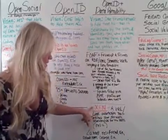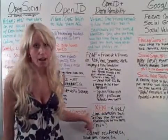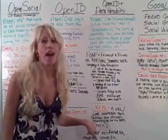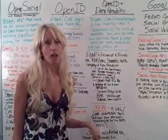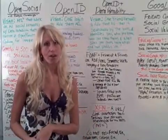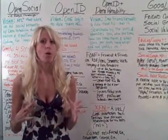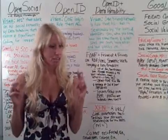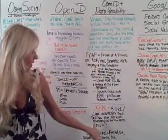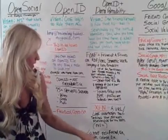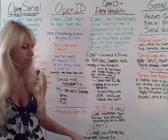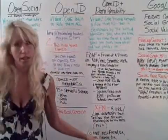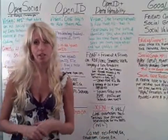XFN is essentially a URL or link annotation that you add in your links on your blog or on your social profiles. So when you have a blogroll and you want to identify someone on your network, you can say REL equals friend, colleague, cohabitant, sweetheart, muse, brother, sister, whatever — they have a whole list of all the identifiers that you can use.